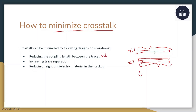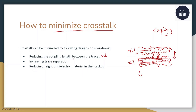Between TL1 and TL2, coupling happens because whenever a signal is traveling in the transmission line, it creates an electric and magnetic field around it. Coupling occurs when the electric and magnetic field of one signal gets intersected by the electric and magnetic field of the other. Whenever they intersect each other, coupling happens. To reduce this coupling, all you need to do is increase the trace separation — as soon as you increase it, the coupling will reduce and hence the crosstalk will reduce.